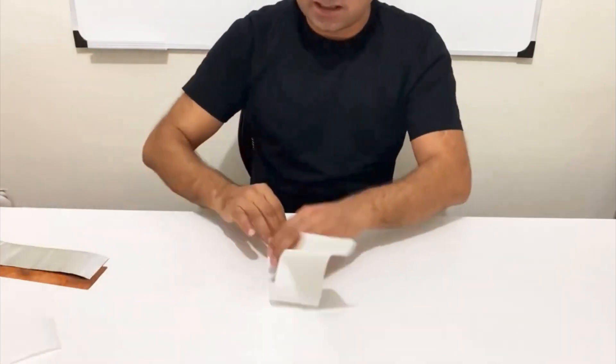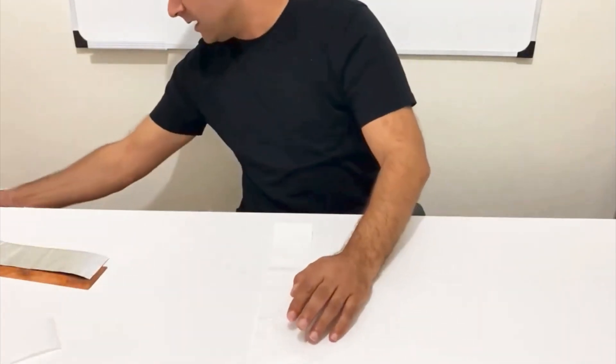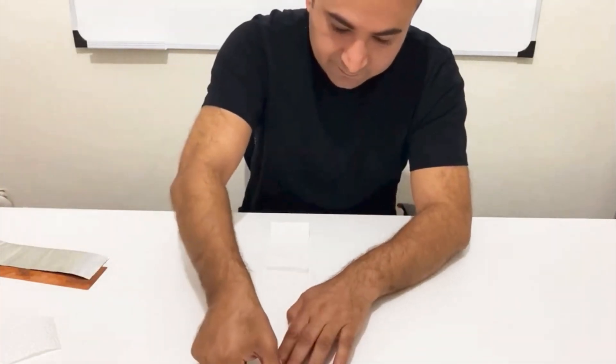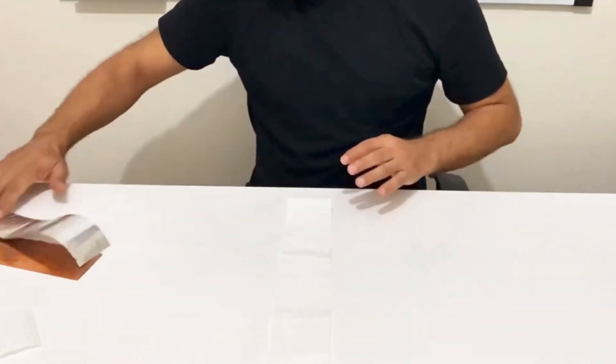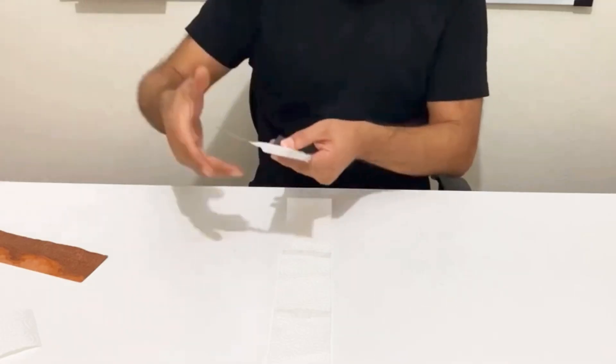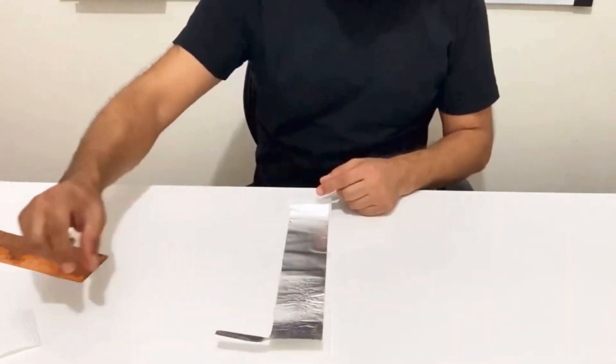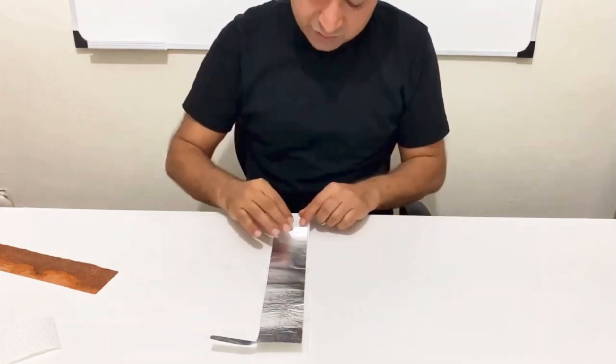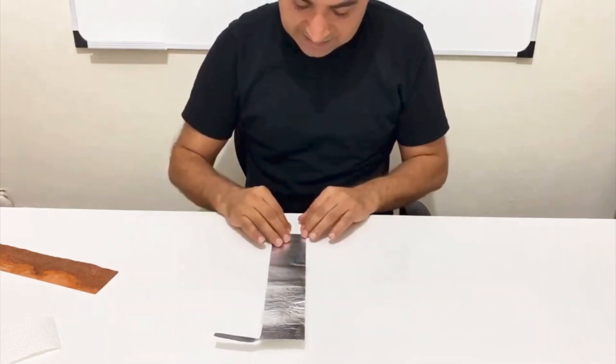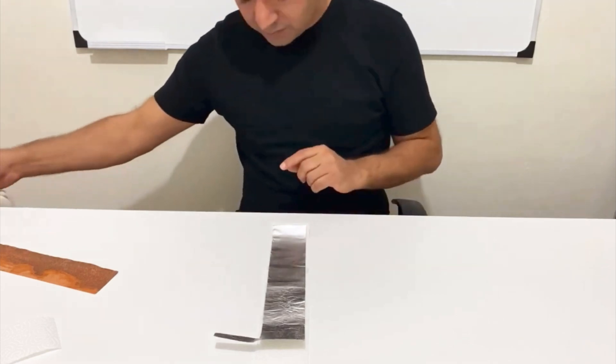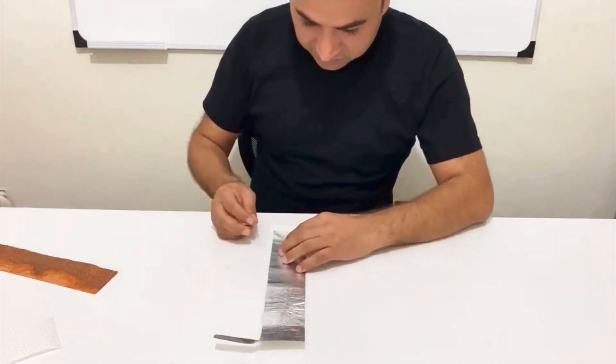First, we are taking our paper towel and just tape it over here. I'm going to put the aluminum foil on that. Be careful. The paper towel, the size of the paper towel should be a little bit larger than the aluminum and copper foils. It's a very important point. Just I'm going to tape it again.